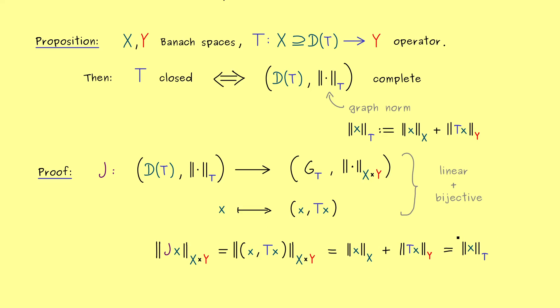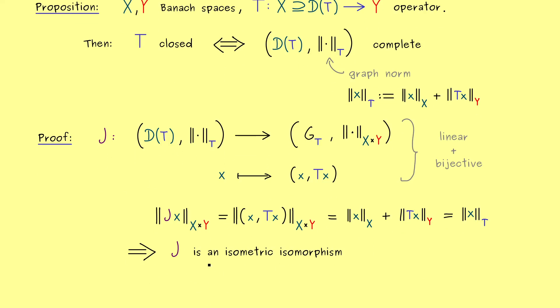Moreover now this implies that the map J does not change the norm at all. It goes from one space into the other but it will not change the length. And this is exactly what we call an isometric isomorphism.